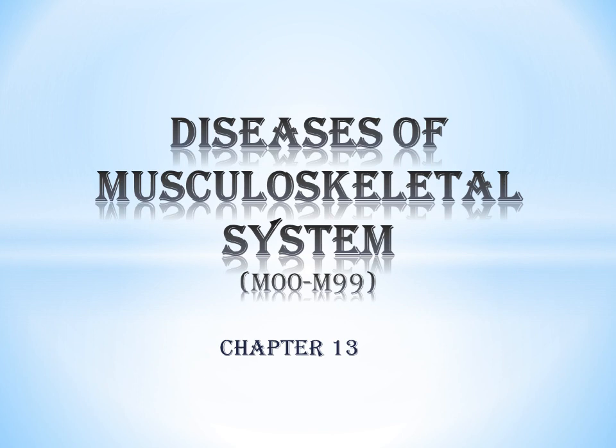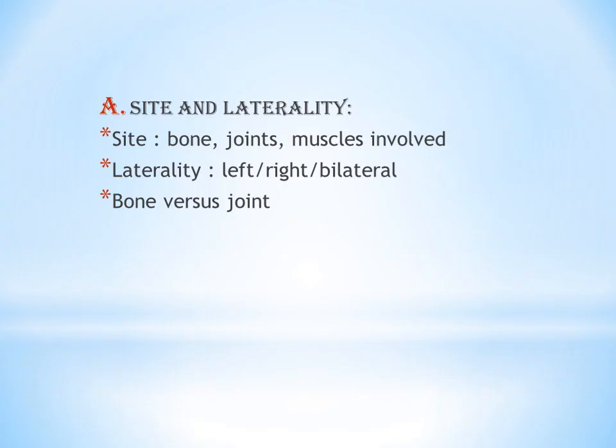The code range for this chapter is M series, M00 to M99. This chapter, Diseases of Musculoskeletal System, involves disease conditions of bones, muscles, joints, etc. Mainly you have guidelines here for fracture and related conditions.